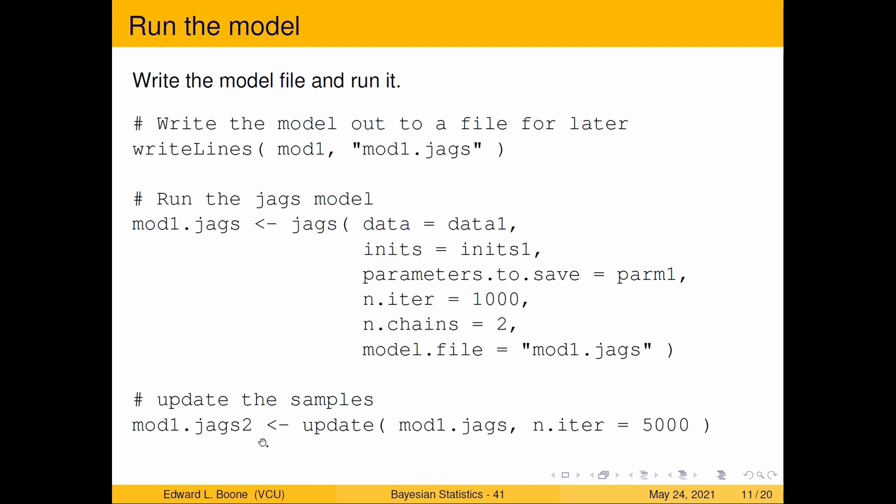We're going to update our samples. I'm going to take mod one jags and I'm going to pull 5,000 samples from two chains so that gives me 10,000 samples. You can think of these initial ones sort of like burn in and these are the ones I'm going to keep. So burn in is the samples that are early on in the chain and may not be reflective of the posterior distribution.